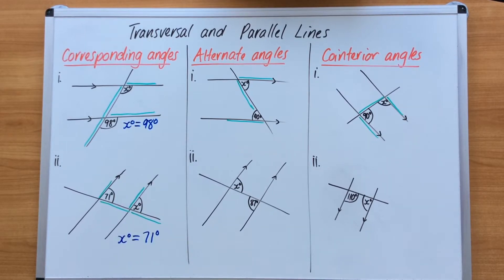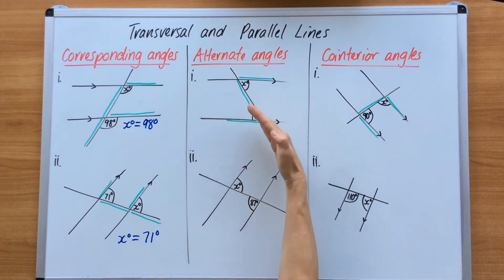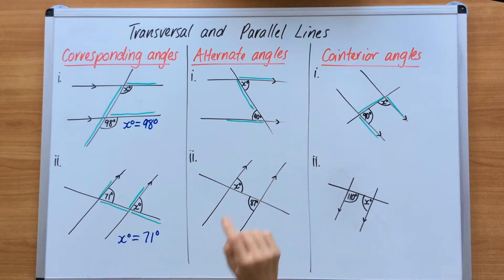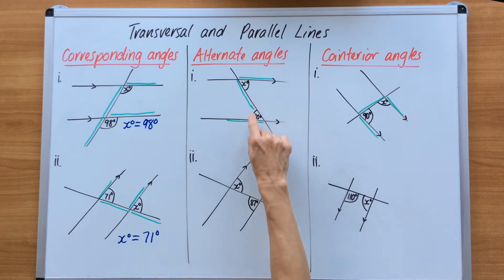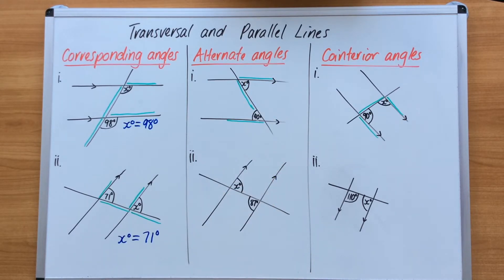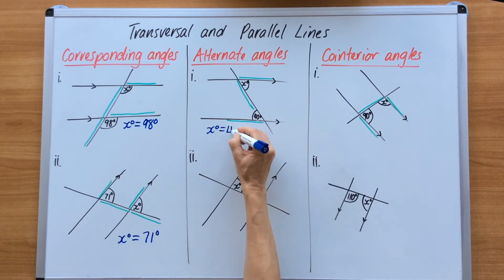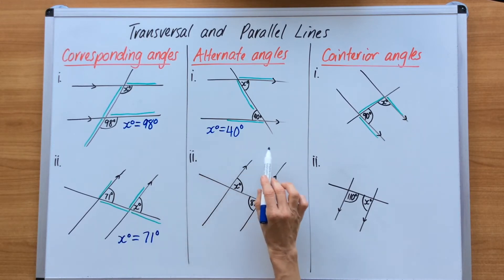Alternate angles are the Z shape. In this example I have found the two angles sitting opposite each other on the transversal line within those parallel lines. I was able to find the Z and place the Z shape down. These angles are identical in degrees, so they're absolutely equal. So I can write X equals 40 degrees. You would normally write 'alternate angles' underneath there to show your understanding of the angle you're looking at.